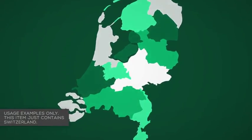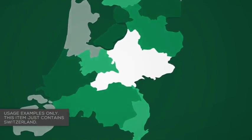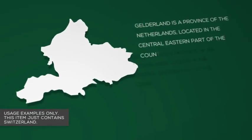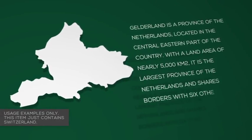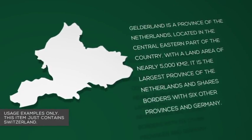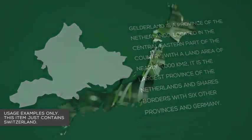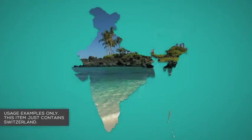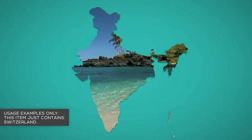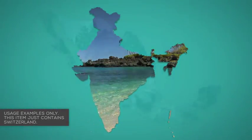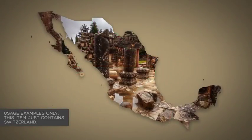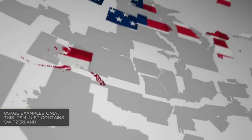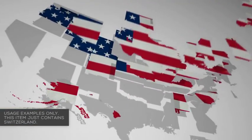Zoom in to regions of interest and hide the layers you don't need to focus on certain areas. Animate individual regions and add your own text and camera moves as required. Use your own content as a texture for the country — images, footage, whatever you need.